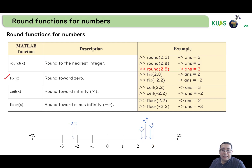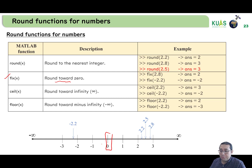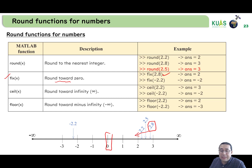The fix function works differently — it rounds towards 0. It finds the nearest integer in the direction of 0. For example, fix(2.8): although 3 is the closest integer, fix rounds toward 0, so the nearest integer in that direction is 2. So fix(2.8) returns 2.